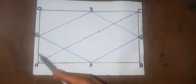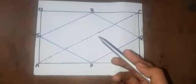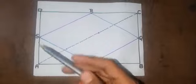So first we will join A and C to make diagonal AC which divides this rectangle into two equal halves, triangle ADC and triangle ABC.